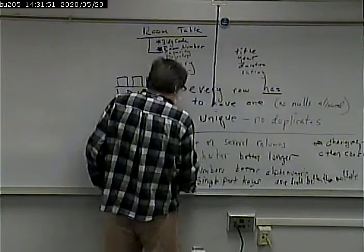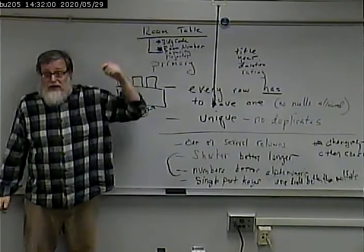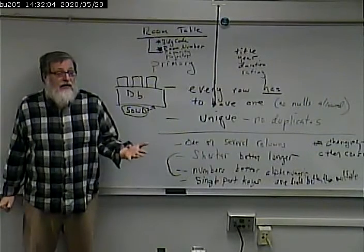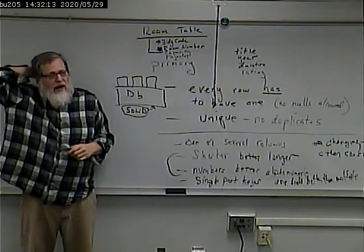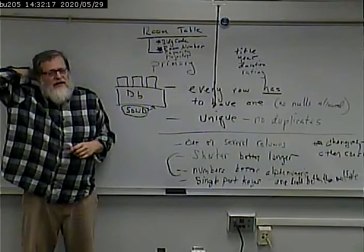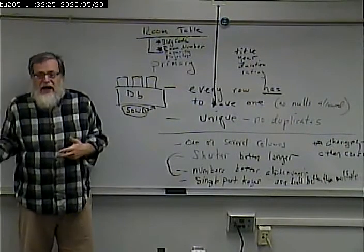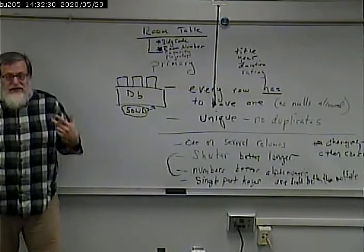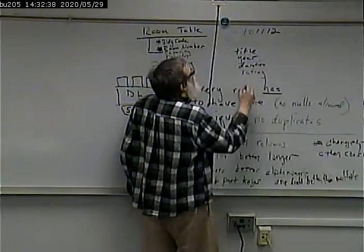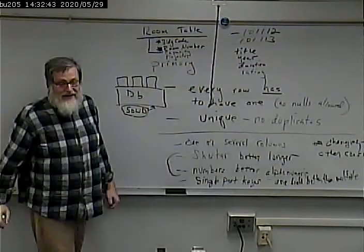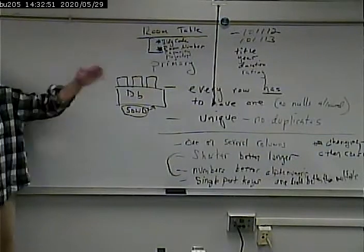A surrogate key is where you essentially just make up an ID number, and every movie gets an ID number. A student number is an example of a surrogate key. When you were born, did you get your student number assigned? Did your parents say, 'We're going to name her Eleanor, and her student ID will be...'? Of course not. If you go to another school you have a different student ID — it's not really an attribute of you. It's just assigned sequentially.